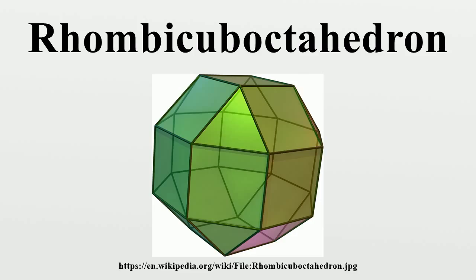Rhombic aboctahedral graph: In the mathematical field of graph theory, a rhombic aboctahedral graph is the graph of vertices and edges of the rhombic aboctahedron, one of the Archimedean solids. It has 24 vertices and 48 edges, and is a quartic Archimedean graph.